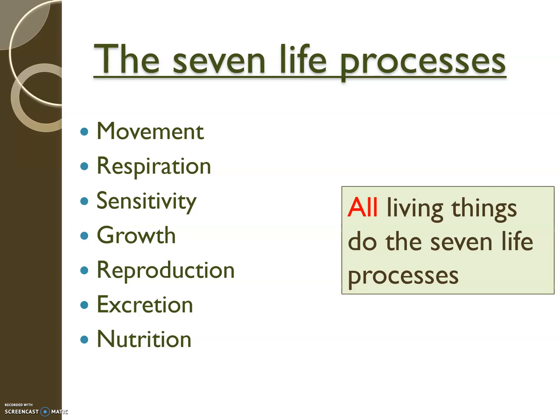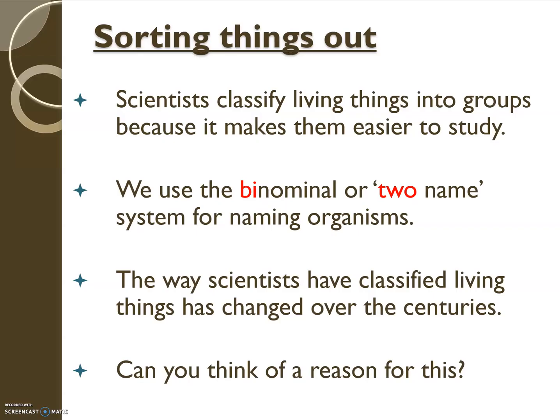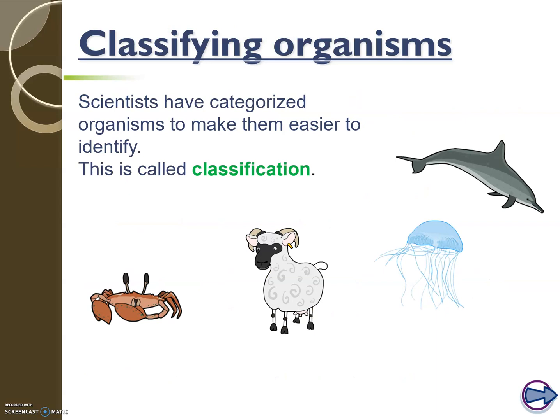If we look at classification, how do we divide species? As you can see, there are many different species in the world and each have their different characteristics that we can split them into. Scientists classify living things and put them into different groups. They normally use binomials, or two names, for the system for naming organisms, and this has helped them to classify things for many centuries. Scientists do this to characterise different organisms into different groups.